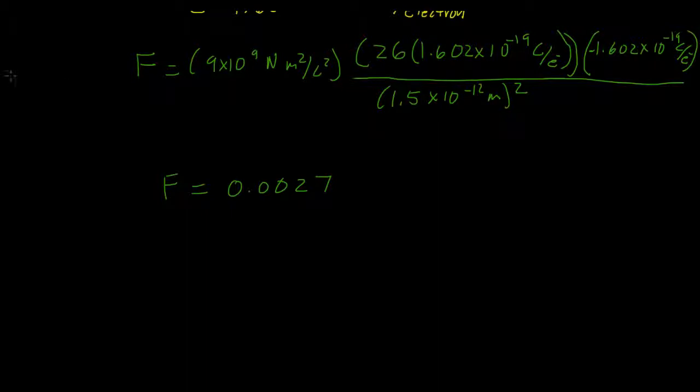And let's take a look at our units here. Here we have coulombs and coulombs, so that will cancel these coulombs squared. Here we have meters squared, and here we have meters squared. And the electrons are not really part of the units. So we're going to be left with newtons.